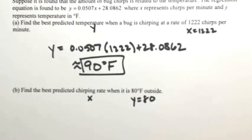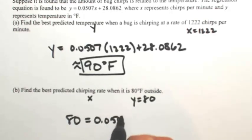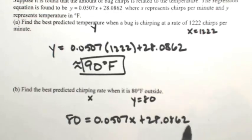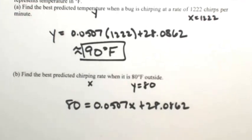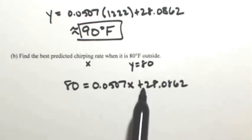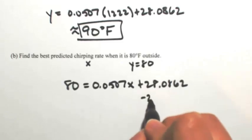So this time we know what y is. So that means 80 equals 0.0507x plus 28.0862. So this one's not as straightforward. We have a little more work to do, but nothing too terrible. So if I want to solve for x, I need to move that 28 to the other side. I'm going to subtract.